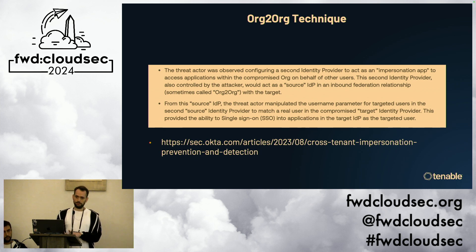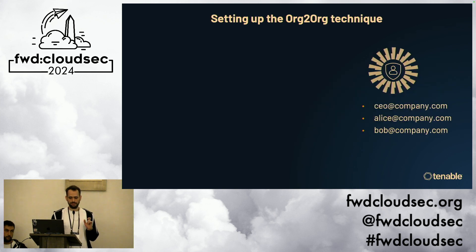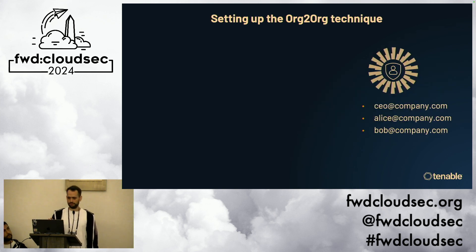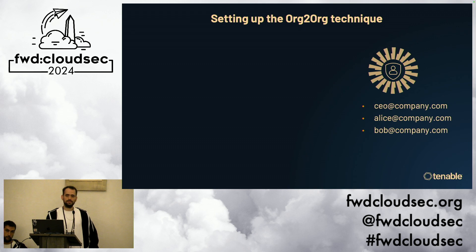Let's dive into the mechanics of the org-to-org pivot TTP, because some of the writing has been slightly unclear on this. Let's say we have a victim Okta — a company called company.com with a bunch of users, including the CEO. Keep in mind this is a post-exploitation TTP: I've already made the call to the call center and have a one-time entry to a very strong user in the Okta instance.